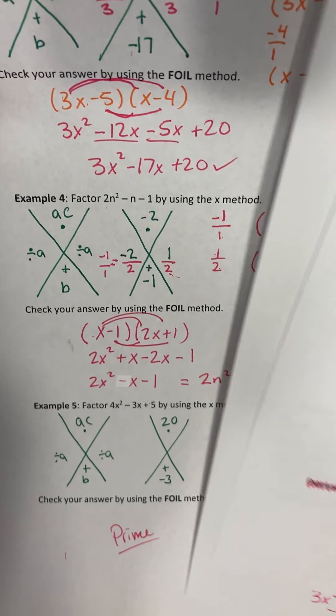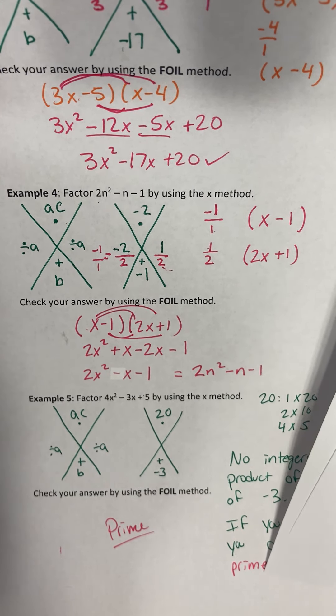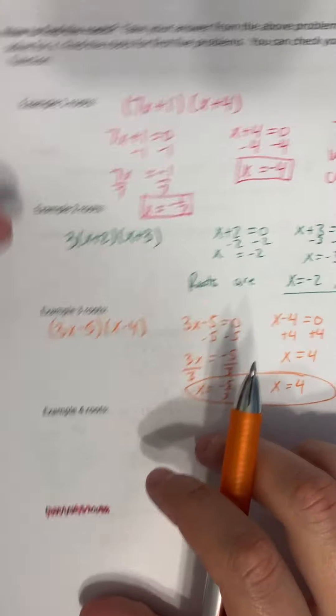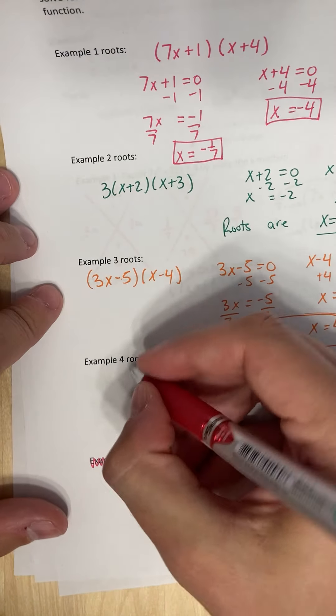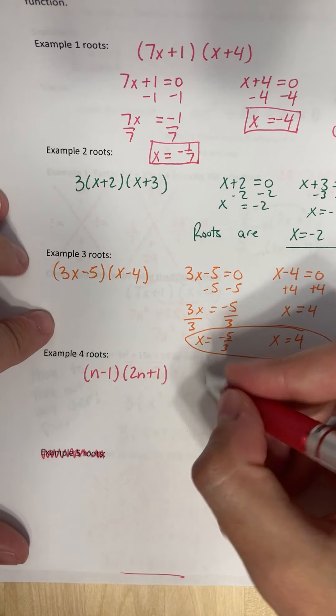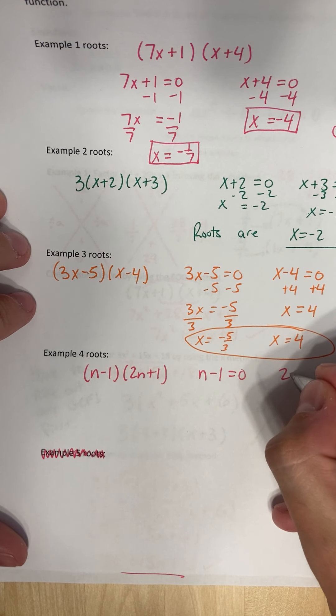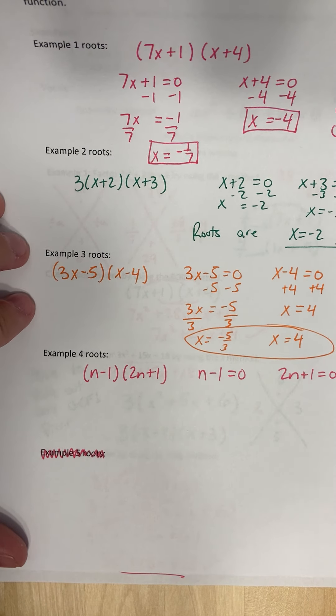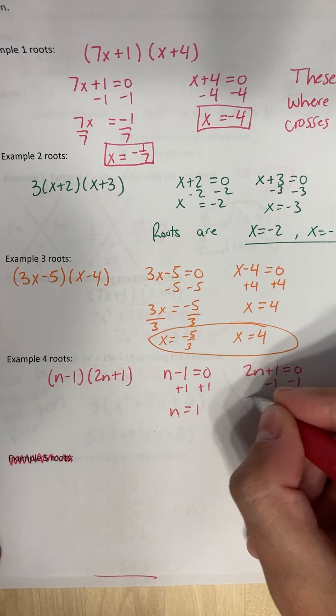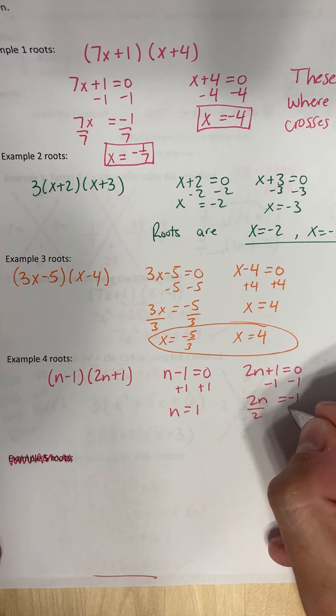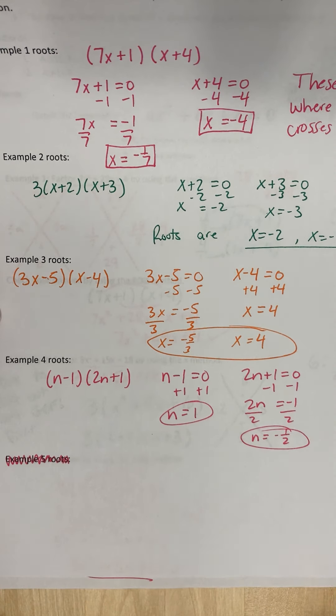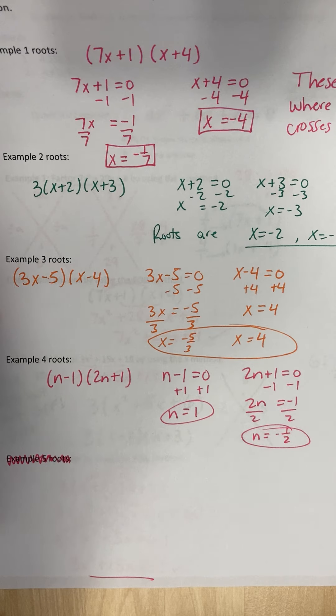All right. And the last one, I'm skipping example five because they didn't have any roots. The last one was n minus one, two n plus one. So to find the roots for this one, I'll say n minus one is equal to zero, and two n plus one is equal to zero. So I'll add one, I'll add one. So n is one. Subtract one, subtract one, I get two n equals negative one, divide by two, n is equal to negative one half. So that's my first root. It's my second root, or first root, second root, doesn't matter which order. And that's how you find the roots.